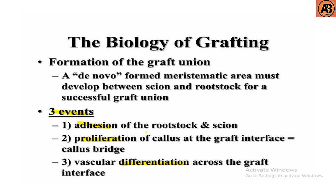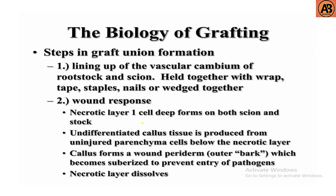There are five steps of graft union formation. The first step is lining up of the vascular cambium of rootstock and scion, held together with wrap tape, staples, nails, or a wedge. The second step is wound response — a necrotic layer one cell deep forms on both scion and stock, and undifferentiated callus tissue is produced from uninjured parenchyma cells below the necrotic layer.